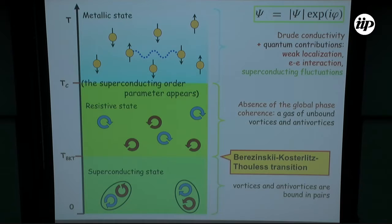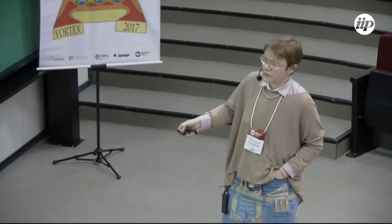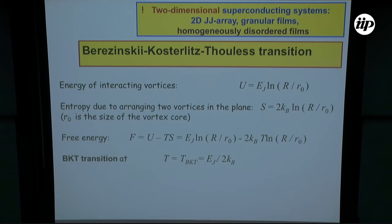At relatively high temperature, superconducting order parameter appears first, and we call it critical temperature. Only at the lower temperature is there transition to the true superconducting state, true in the sense of we have global phase coherence. Between them there is resistive state. Now I would like to emphasize the main ingredient involved here in this Berezinskii-Kosterlitz-Thouless transition.